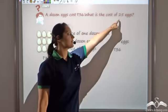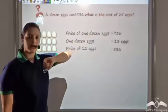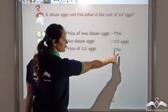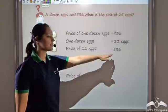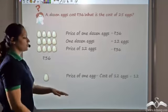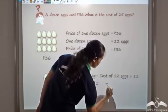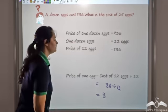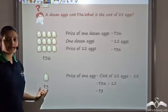Now what we want to find is the cost of 25 eggs. So applying the unitary method, we'll first find the cost of one unit, that is one egg. We know price of 12 eggs is 36. So the cost of one egg would be 36 divided by 12, which gives me 3. So the price of one egg is 3 rupees.